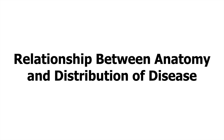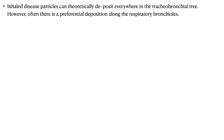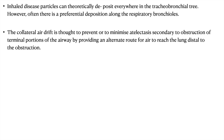Coming to the relationship between anatomy and distribution of disease: inhaled disease particles can theoretically be deposited everywhere in the tracheobronchial tree, but often there is a preferential deposition along the respiratory bronchioles. Collateral air drift is thought to prevent or minimize atelectasis secondary to obstruction of a terminal portion of the airway by providing an alternate route for air to reach the lung distal to the obstruction. So many times the whole secondary pulmonary lobule will not be collapsed — some portions will still have air because of this collateral air drift.